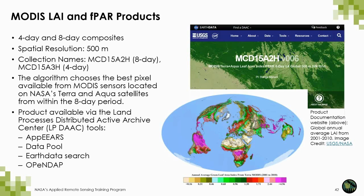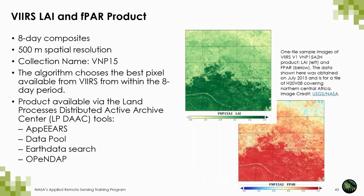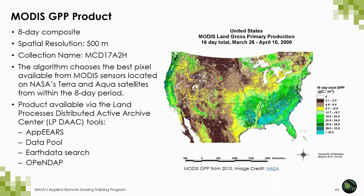The MODIS LAI and FPAR products are available at 4 and 8-day composites with a resolution of 500 meters, with the algorithm choosing the best pixel within that 4 or 8-day window. LAI is an index that quantifies the one-sided leaf area of a canopy, while FPAR is the fraction of incoming solar energy absorbed through photosynthesis at 400 to 700 nanometers. VIIRS also has an LAI/FPAR data product providing information about the vegetation canopy at 500 meters. These products are intentionally designed to align with the MODIS products.